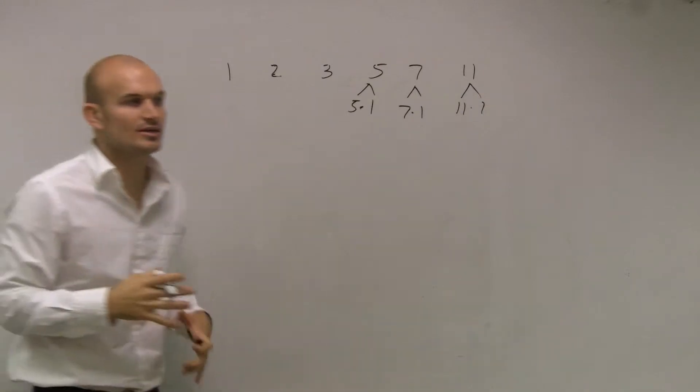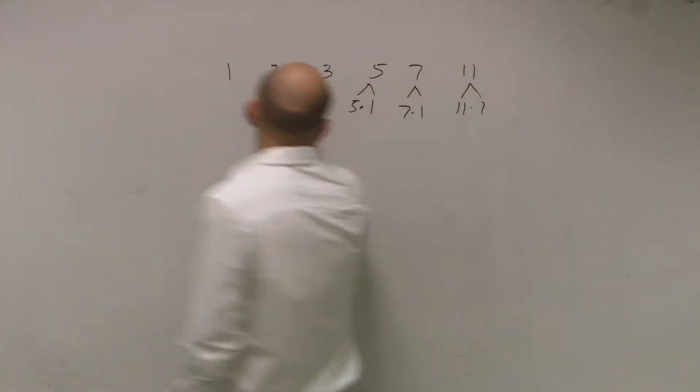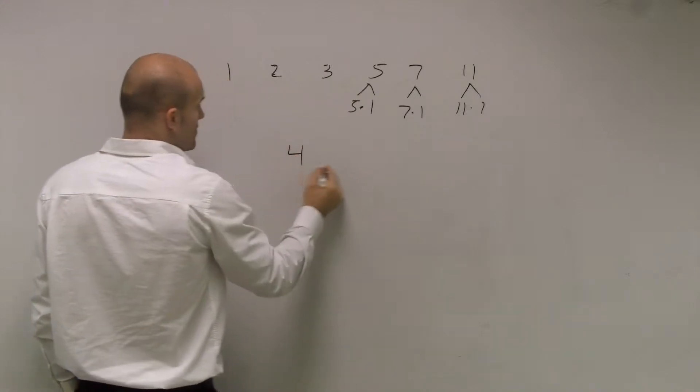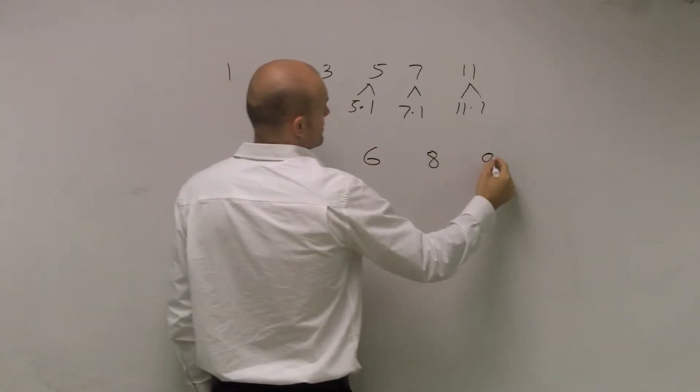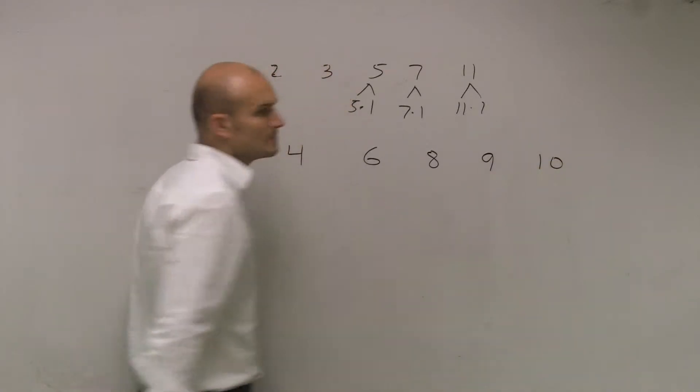Now let's take a look at the numbers that we omitted in those first couple. The first number I omitted was 4. Then let's take a look at 6, 8, 9, and 10.